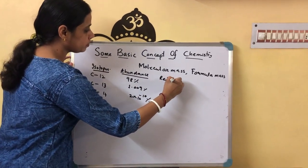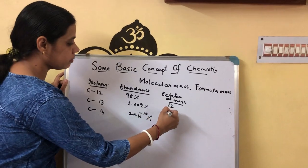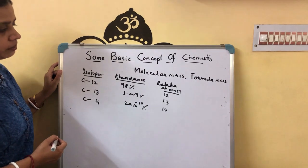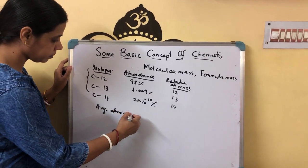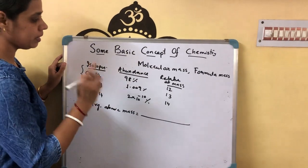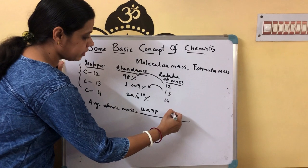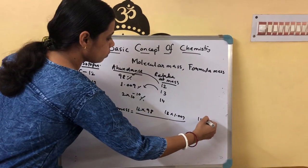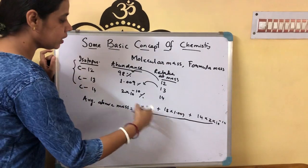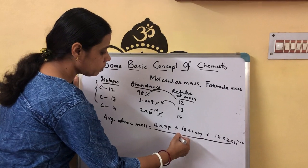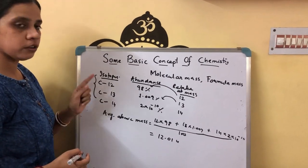And you know their relative atomic masses: for C12 it is 12, for C13 it is 13, and for C14 it is 14. For this type of element, we calculate average atomic mass. We simply multiply their relative atomic mass with their abundance: 12×98 for C12, 13×1.009 for C13, and 14×(2×10⁻¹⁰) for C14. Then we add all three and divide by the total percentage of abundance, which is 100. So the average atomic mass of carbon comes out to be 12 U.